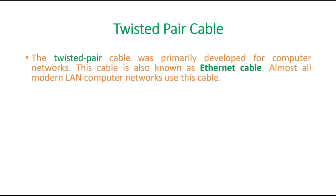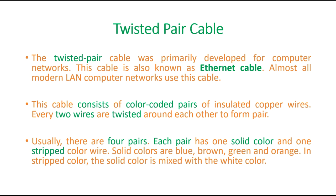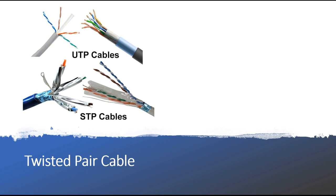Twisted pair cables were primarily developed for computer networking and are also known as Ethernet cables. In most modern LAN networks, these cables are used. This cable consists of color-coded pairs of insulated copper wires; every two wires are twisted around each other to form a pair. Usually there are four pairs — each pair has one solid color and one striped color. The solid colors are blue, brown, green, and orange; the striped color mixes the solid color with white.